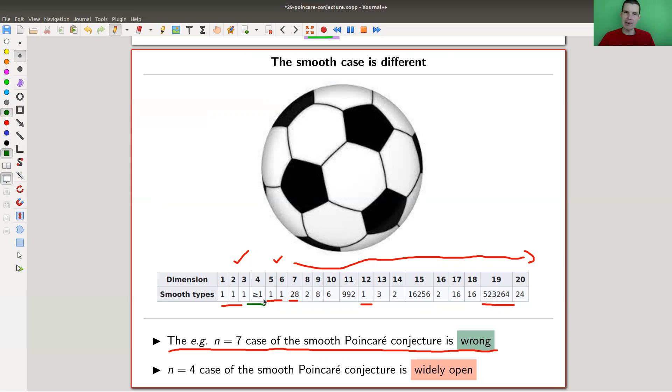In dimension 4 you have essentially two groups of experts - some try to prove it, some try to disprove it. That's essentially the status of this conjecture.